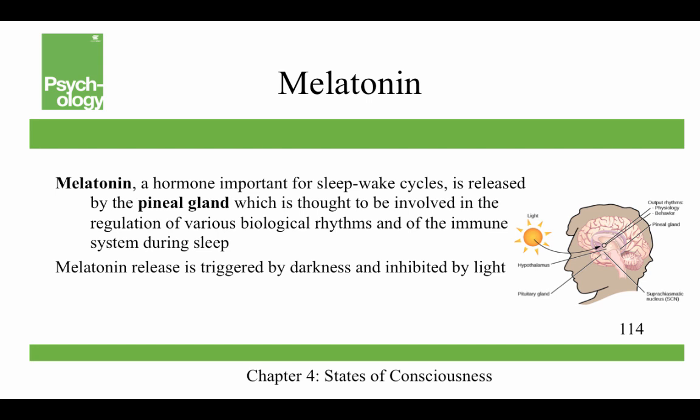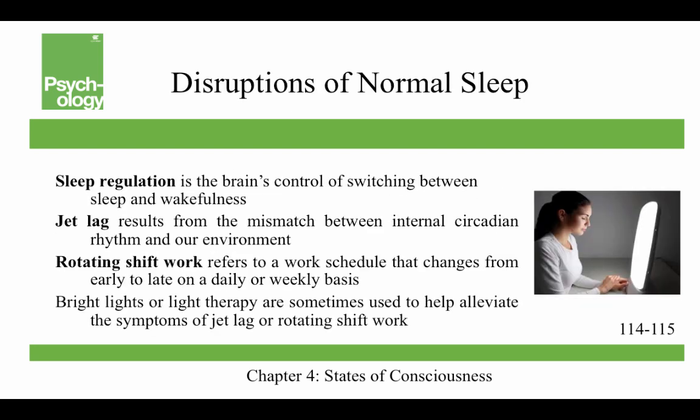Melatonin is a hormone important for the sleep-wake cycle. It's released by the pineal gland, which is thought to be involved in the regulation of various biological rhythms and of the immune system during sleep. Melatonin release is triggered by darkness and inhibited by light, which is one of the reasons why it's related to sleep. Sleep regulation is the brain's control of switching between sleep and wakefulness, and it also has to coordinate this cycle with the outside world.